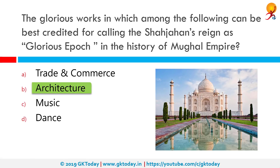Many historians describe the reign of Shah Jahan as the golden age not only of the Mughal Empire but of medieval Indian history, and architecture plays the primary role in that.